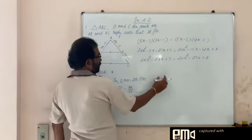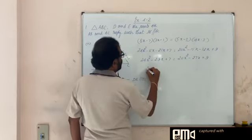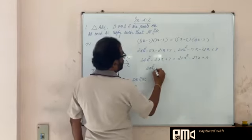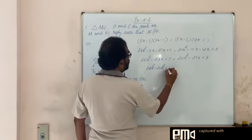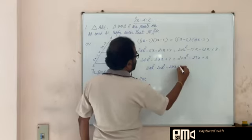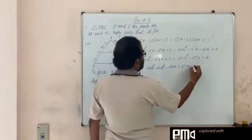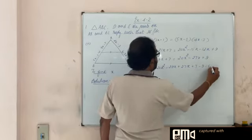Here 24x squared, this 20x squared comes here and becomes minus. So I write it: 24x squared minus 20x squared. Then here minus 29x, and this minus 27x here becomes plus 27x. Then plus 7 here, this 9 comes here, becomes minus 9 is equal to 0.